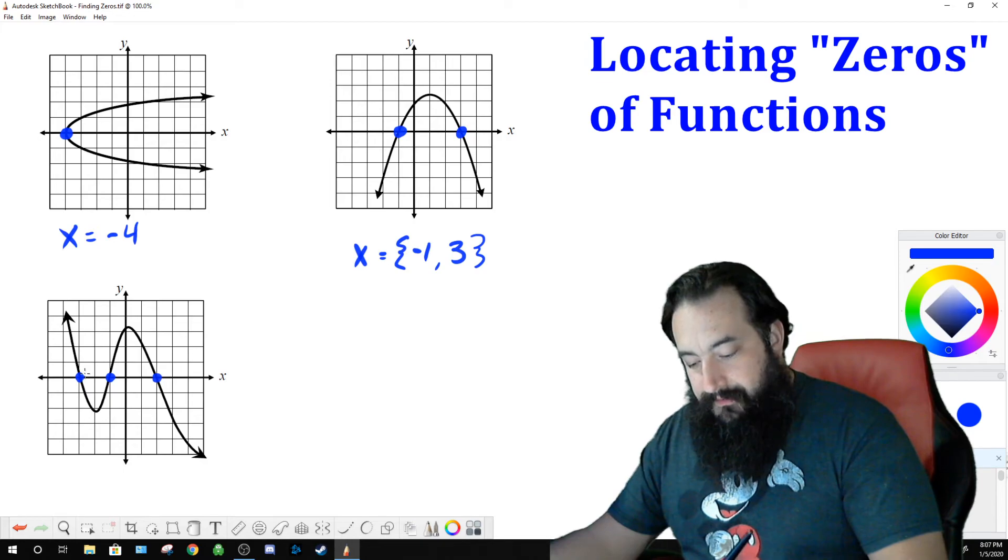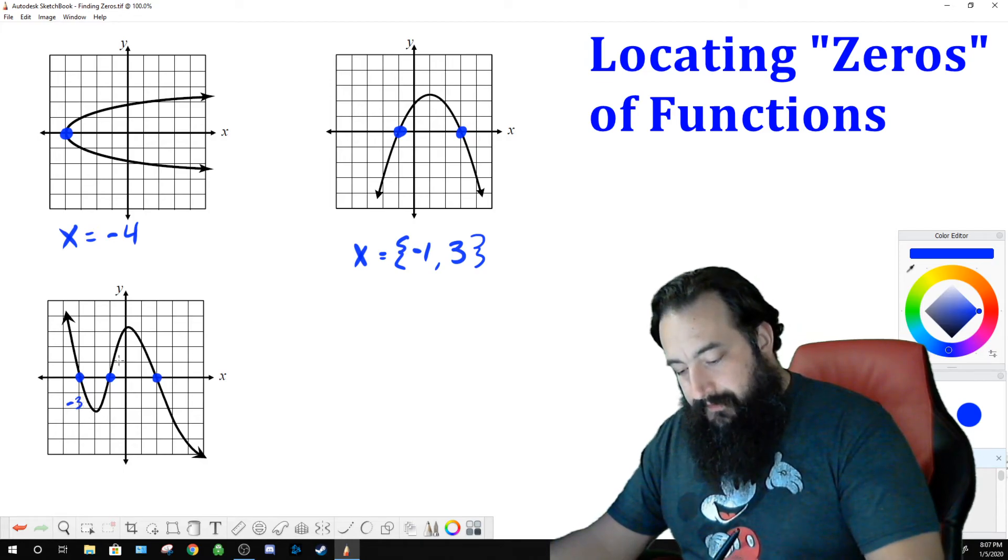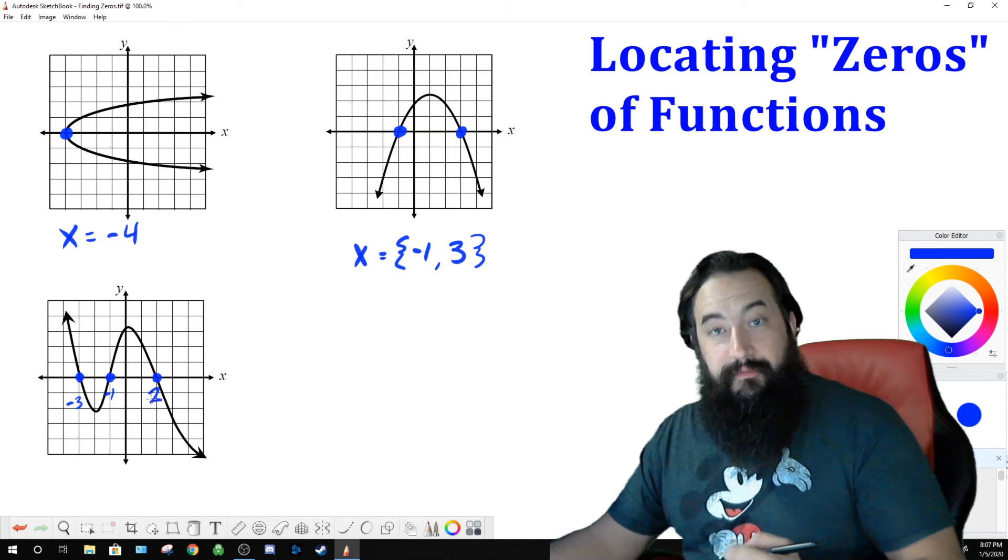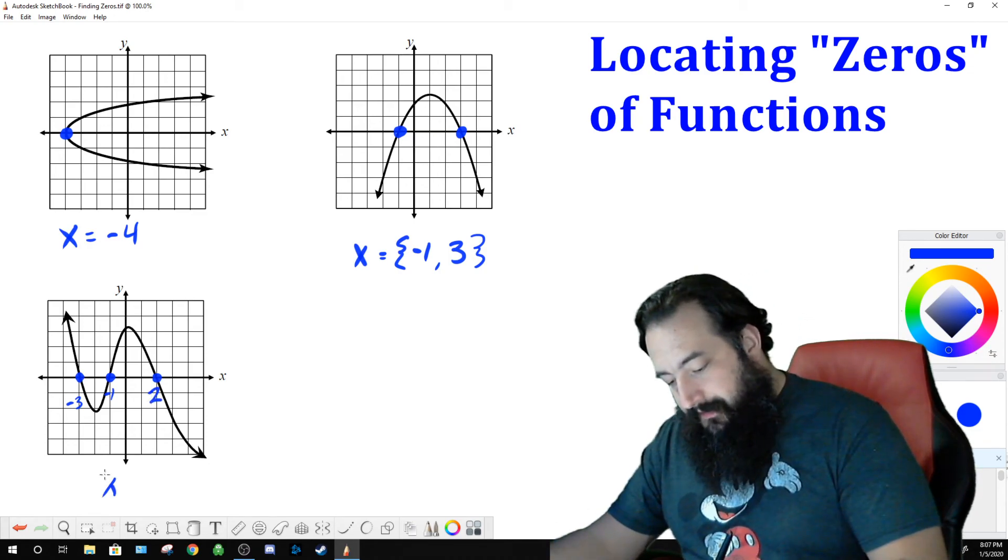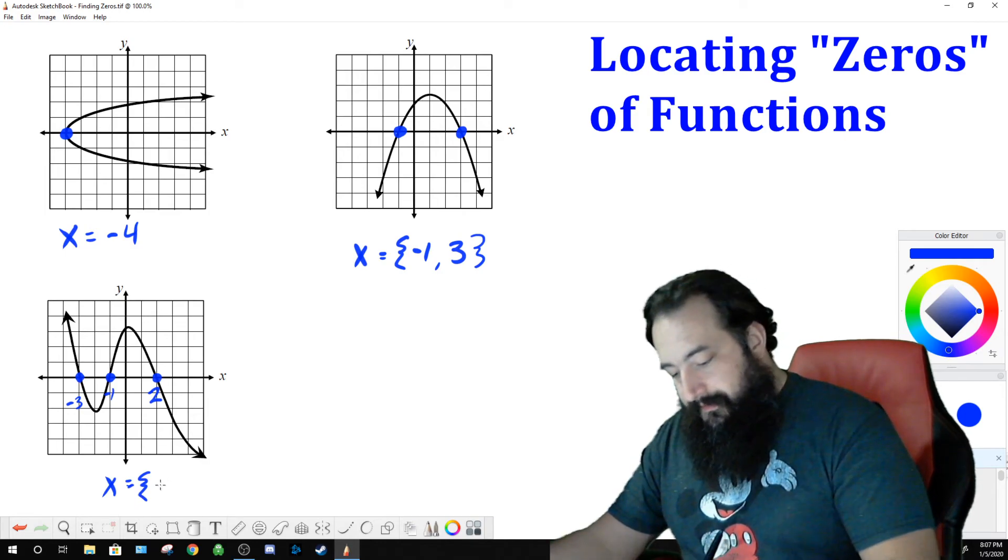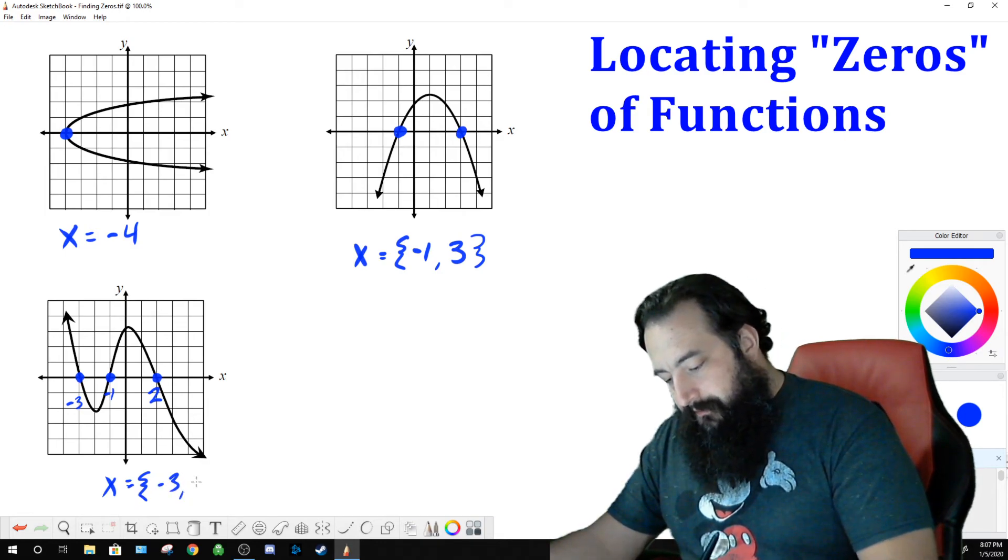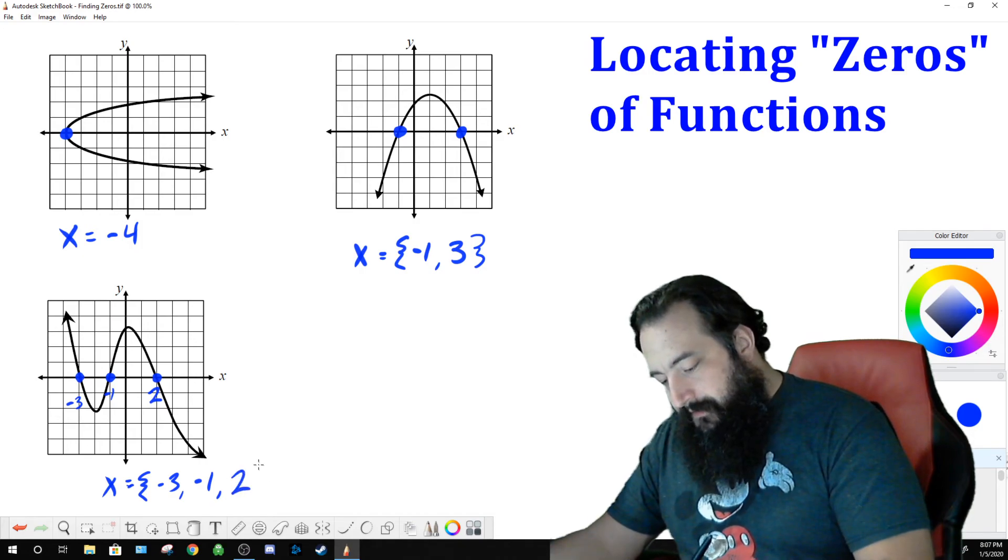The x value here, negative three. The x value here, negative one. And the x value here is positive two. So our three zeros are located at, again, this is a set of zeros. So I'm going to use set notation, which has curly brackets, negative three, negative one, and two.